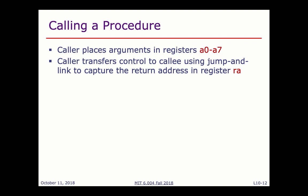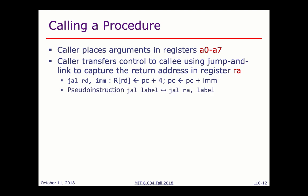To call a procedure, the caller places arguments in registers a0 through a7, then transfers control using the jump-and-link instruction (JAL). JAL stores PC+4 to a destination register (giving the return address) and then jumps to a label. Typically RA is the destination, so 'JAL label' is shorthand for 'JAL RA, label'. When RA is omitted, it's implied.